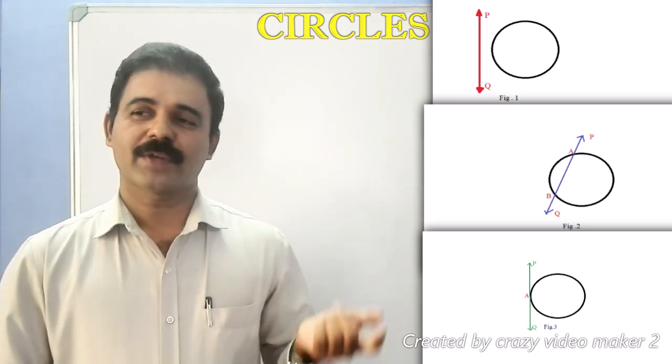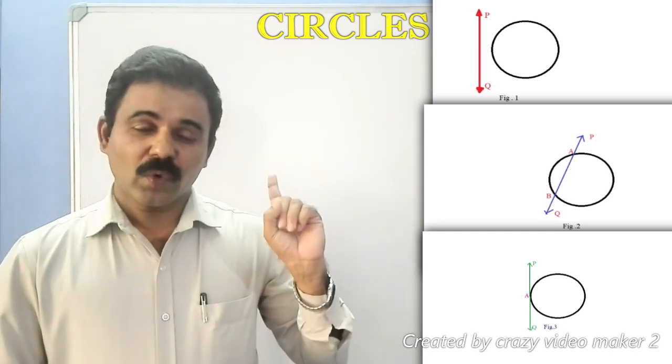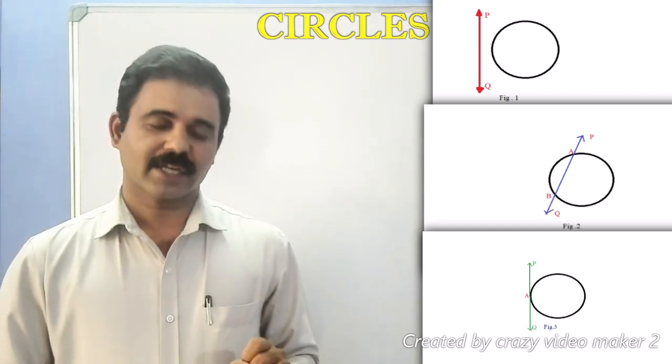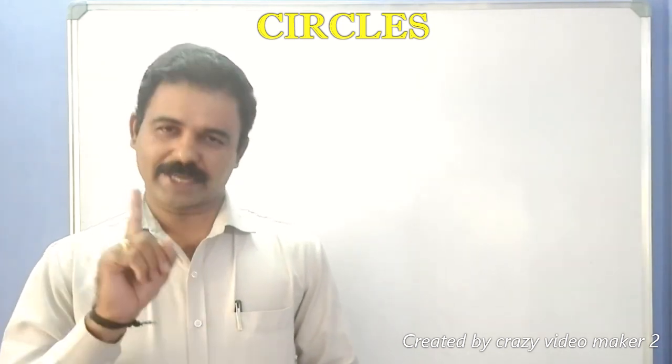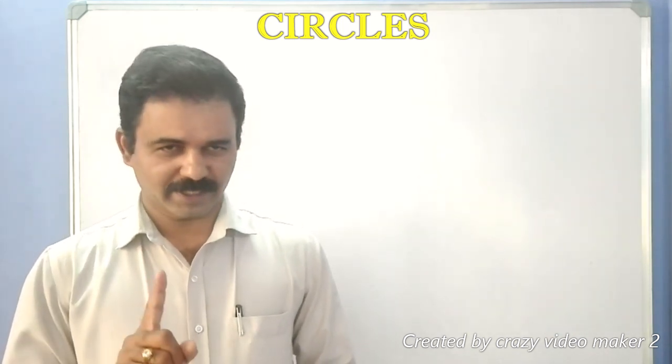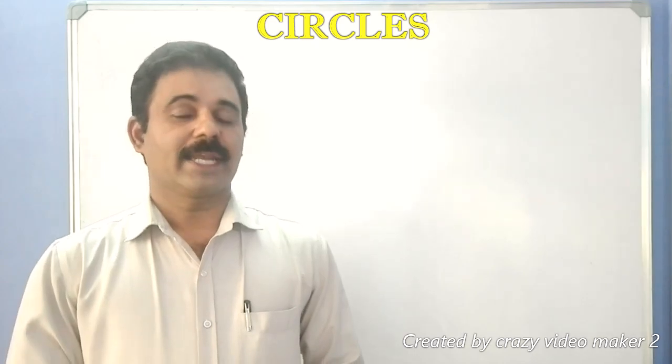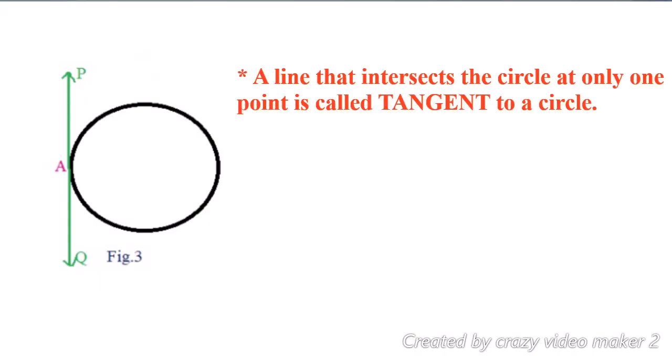The third figure shows there is only one common point between the straight line and the circle — that is called the tangent to the circle. This year we have to study about the circle, tangent of the circle, the properties of the tangent to the circle, and the theorems based on the tangent to the circle. A line that intersects the circle at only one point is called the tangent to the circle.